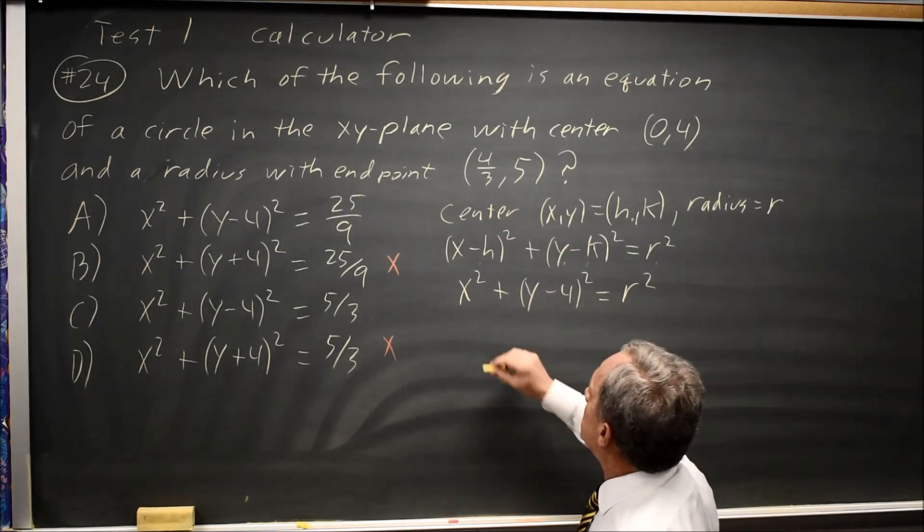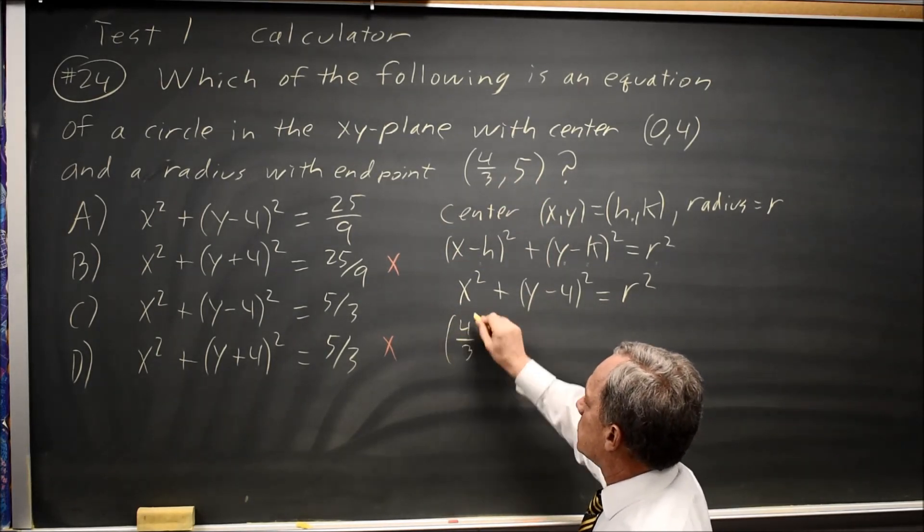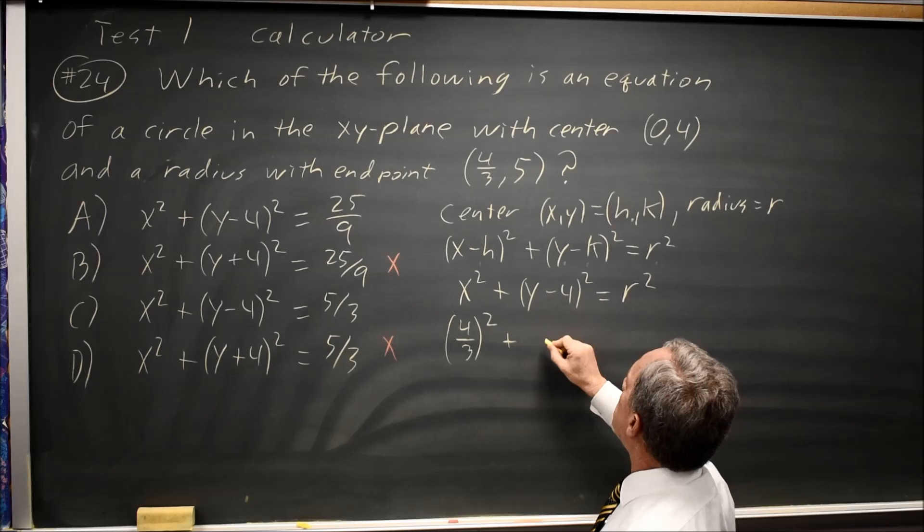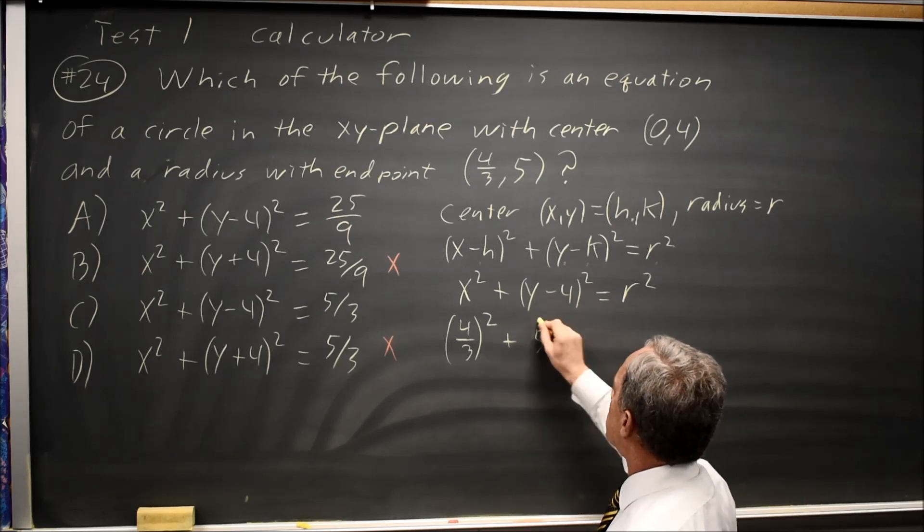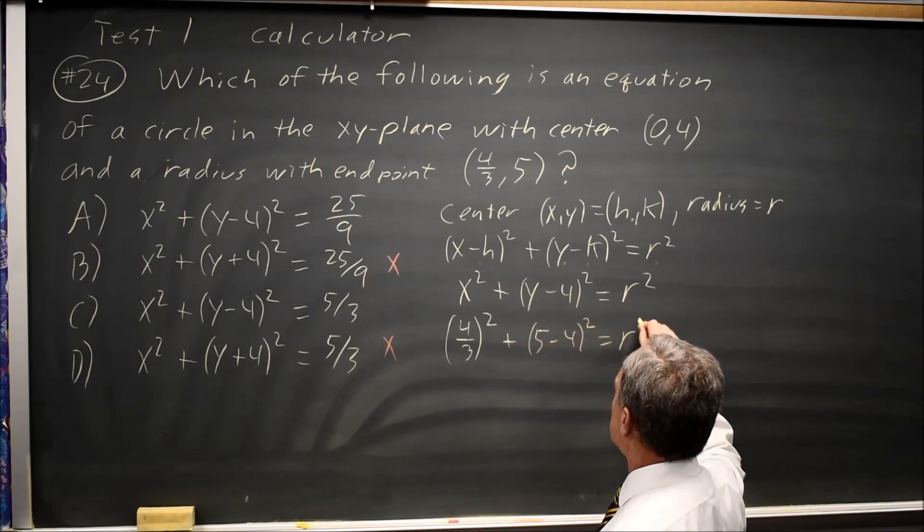So x squared is 4 thirds squared, y minus 4 squared is 5 minus 4 squared, and that sum is r squared.